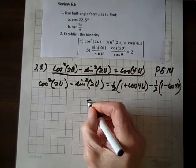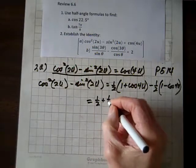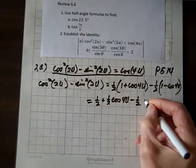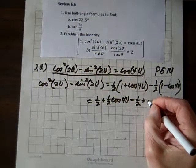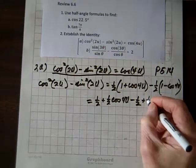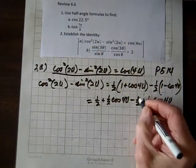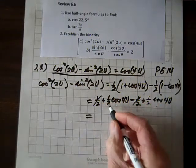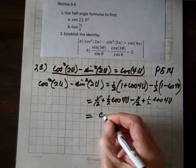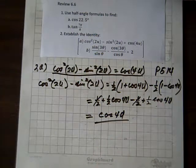Now we'll multiply through by the one half, and we've got one half plus one half cosine of 4u, minus one half — and a minus times a minus is a plus — plus one half cosine of 4u. Now these one halves cancel out, and one half cosine of 4u plus one half cosine of 4u equals cosine of 4u. And we've established that identity.